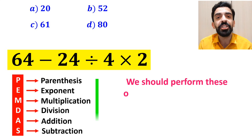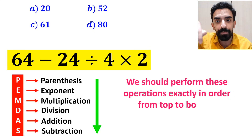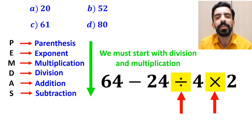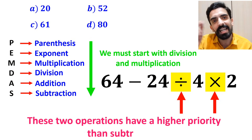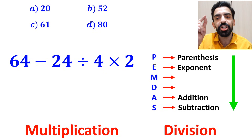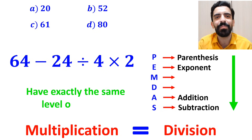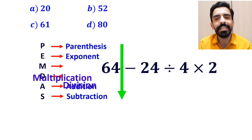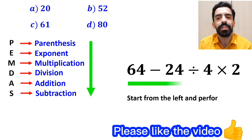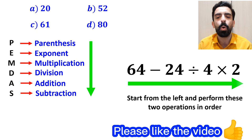We should perform these operations exactly in order from top to bottom. According to the PEMDAS rule, we must start with division and multiplication, because these two operations have a higher priority than subtraction. However, it's very important to keep in mind that multiplication and division have exactly the same level of priority. In this situation, the best approach is to start from the left and perform these two operations in order.